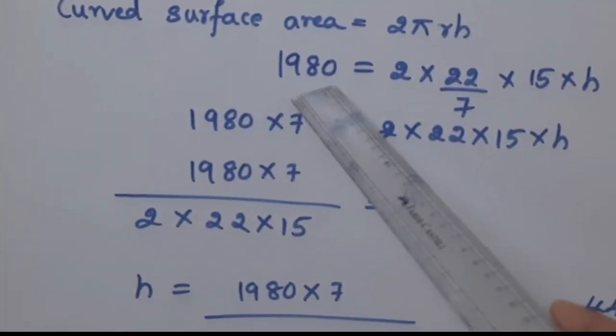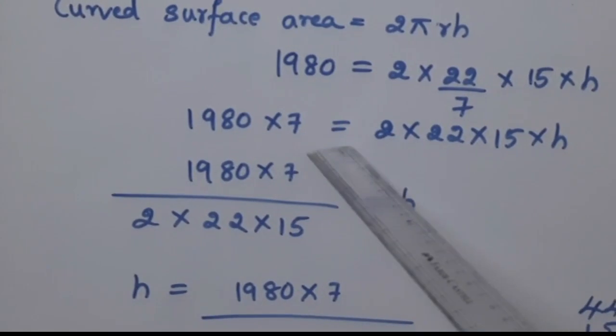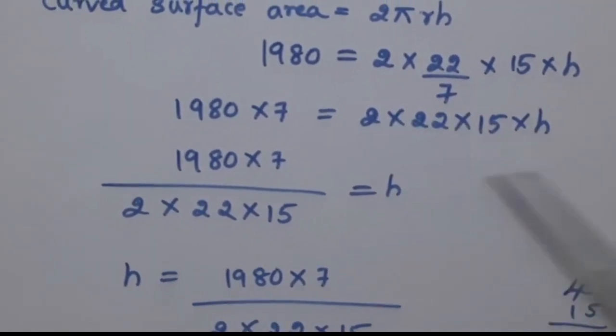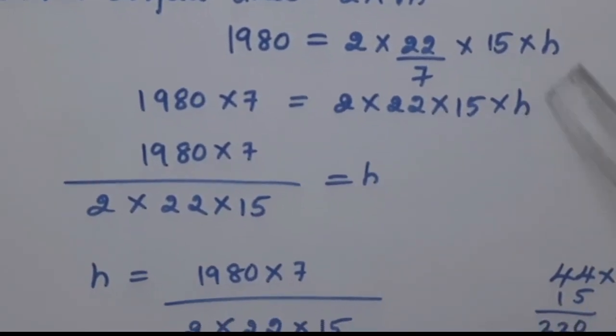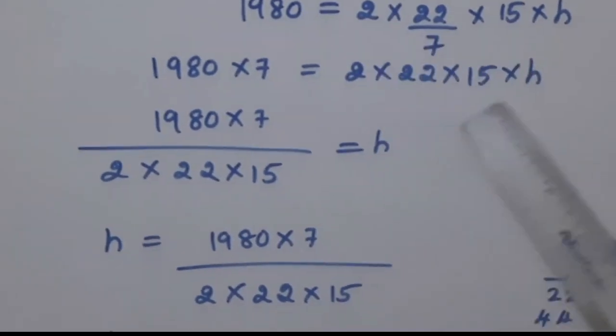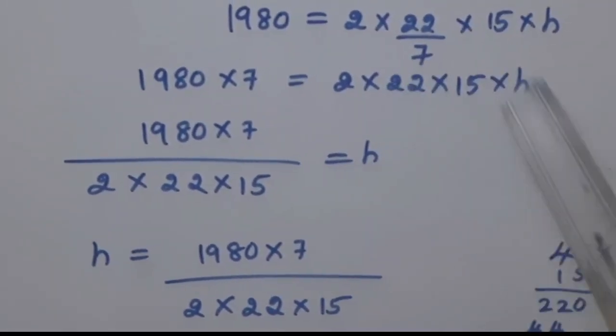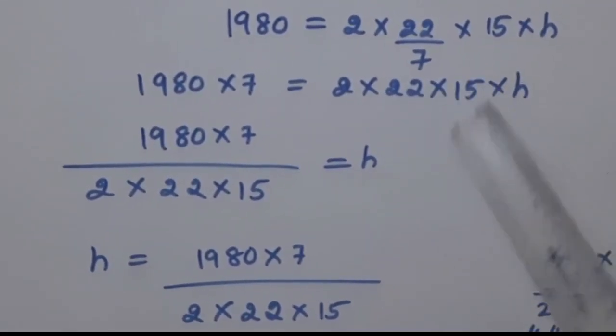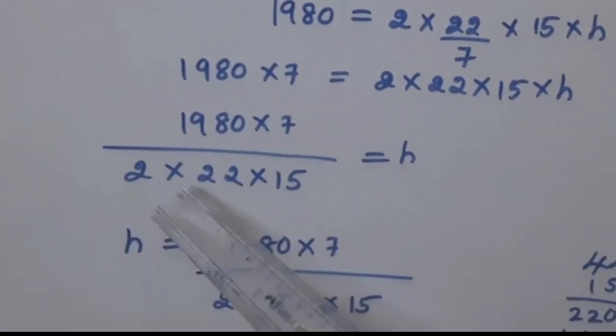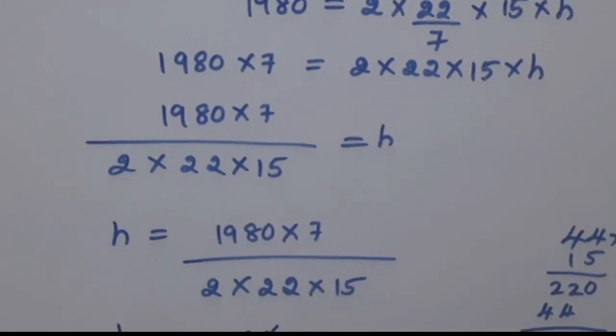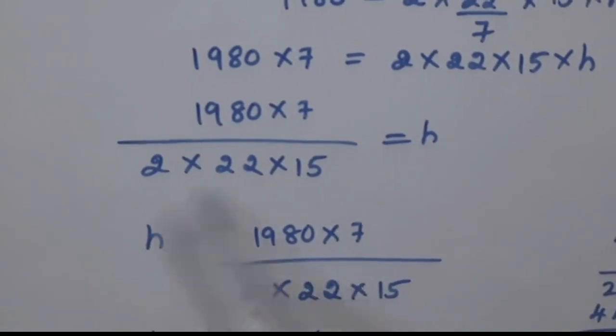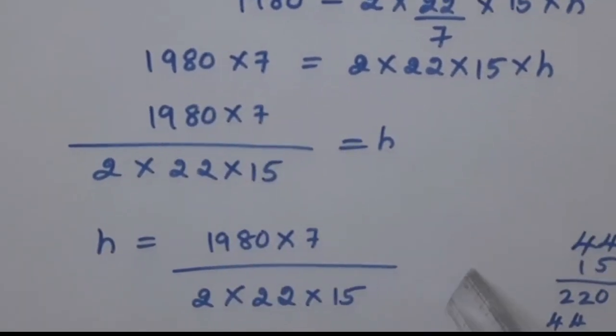We will keep H alone here and rest all we will take that side. Here all the numbers are multiplied with each other. Therefore, when it goes that side it becomes divided. That is 1980 multiplied by 7 upon 2 into 22 into 15, which is equal to H. We will interchange, that is H we will take here and these things we will take this side.